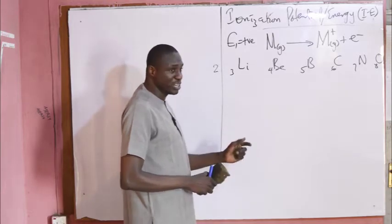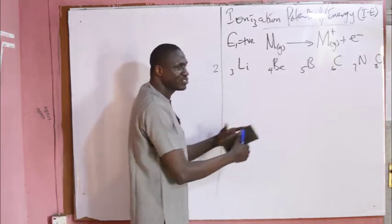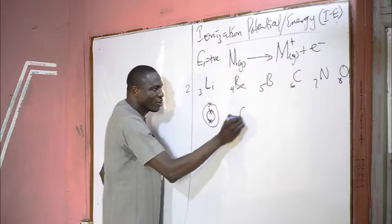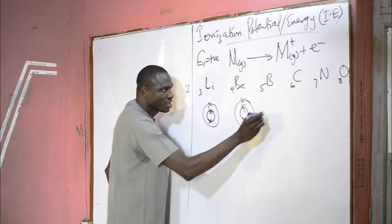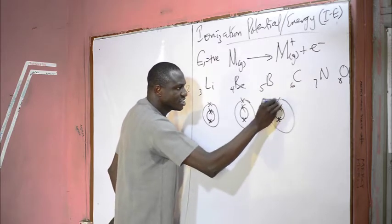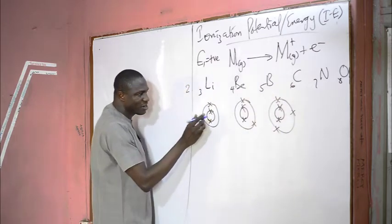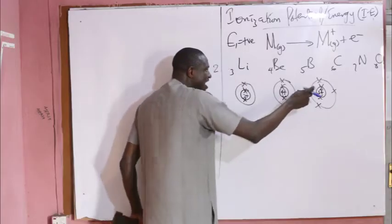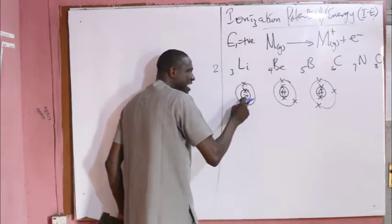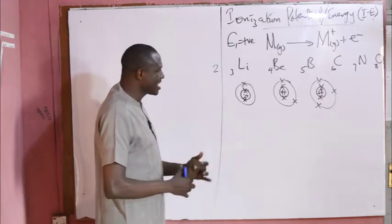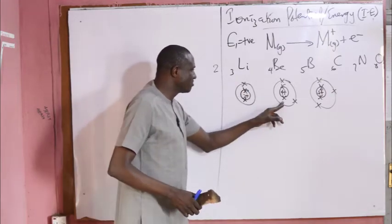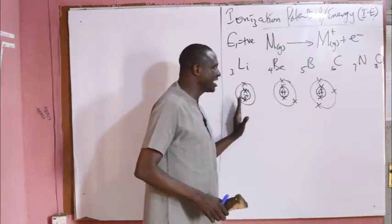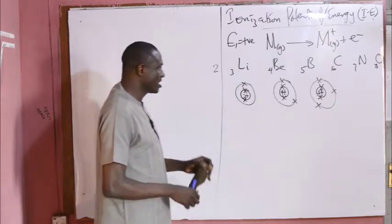Screening effect also becomes more pronounced because more electrons have been added to the same shell. Take lithium for instance: it has electron configuration 2-1, beryllium 2-2, boron 2-3, and so on. Lithium has three protons, beryllium four protons, and boron five protons. The nuclear charge in boron is higher than that of beryllium, and that of beryllium is higher than that of lithium. So you expect the first ionization energy of beryllium to be higher than that of lithium, and ionization energy increases across the period as a result of these factors.